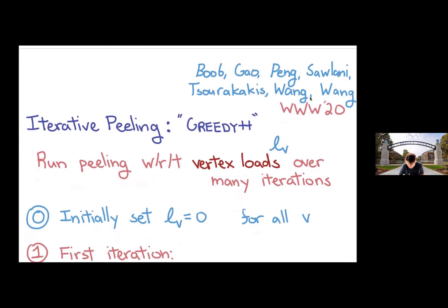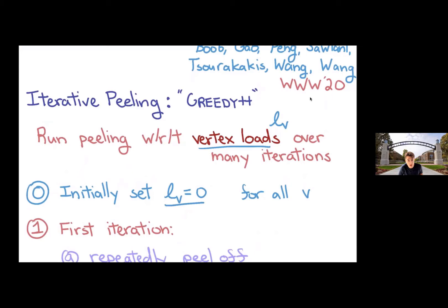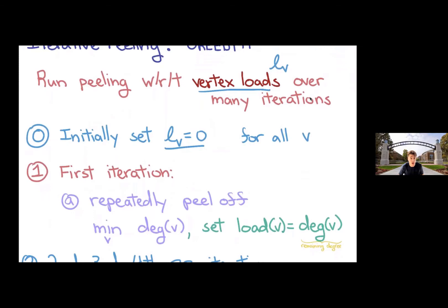To make that, to add some memory to the process, introduce vertex loads. So initially, every vertex has load zero. And the first iteration is the exact same as the regular peeling process. We repeatedly peel off the minimum degree vertex, and then whatever that degree is of the vertex when it gets peeled off, we write that down in the load. It's sort of this peeled off degree.